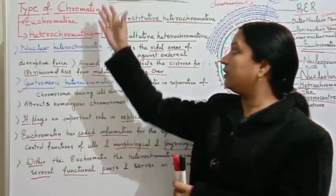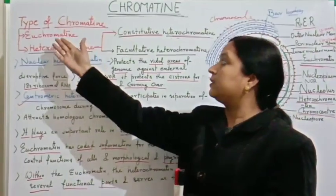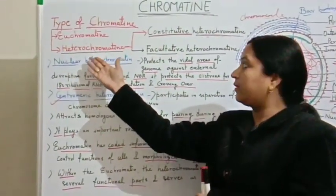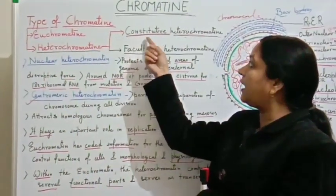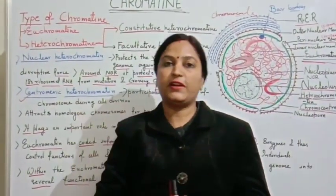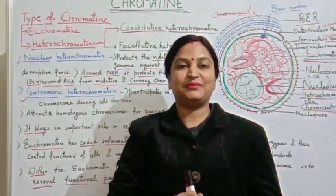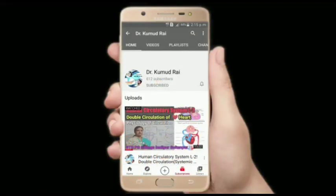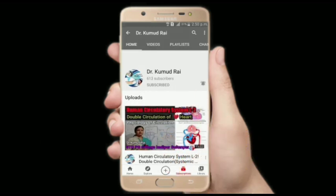We have done a detailed study of euchromatin and heterochromatin. Euchromatin means true chromatin with lightly stained fibers, while heterochromatin fibers are darkly stained. Heterochromatin is of two types: constitutive heterochromatin and facultative heterochromatin. We'll meet again with our next topic — thank you. Press the bell icon on the YouTube app and never miss another update.